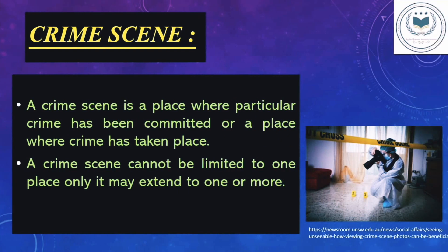What is a crime scene? A crime scene is a place where a particular crime has been committed or a place where crime has taken place. A crime scene cannot be limited to one place only; it may extend to one or more. Crime scene is a place where a criminal offense has taken place. It can be any kind of criminal offense like murder, theft, robbery, etc. Crime scene can be indoor and outdoor as well. To know more details about crime scene, do visit our video, Basic Concept of Crime Scene. The link is given in description below.